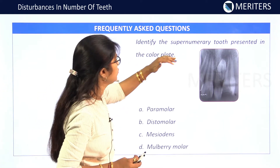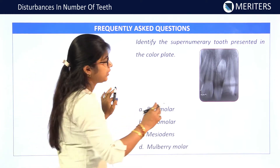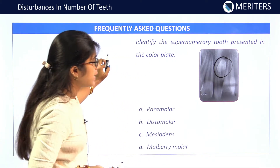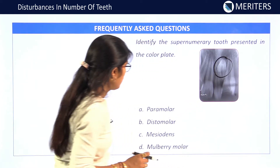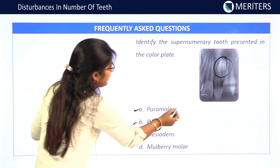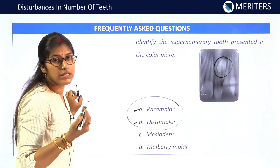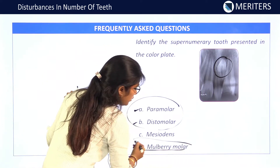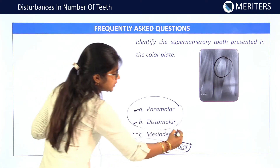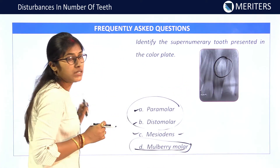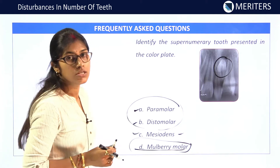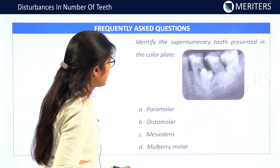Sample MCQ: Identify the supernumerary tooth present in the color plate. Looking at this X-ray film, you can appreciate a supernumerary tooth present in the anterior region. Options include paramolar, distomolar, mesiodens, and mulberry molar. Paramolar and distomolar are supernumerary teeth seen in the posterior region. Mulberry molar is not a supernumerary tooth. Since the supernumerary tooth is in the anterior region, the correct answer is mesiodens.